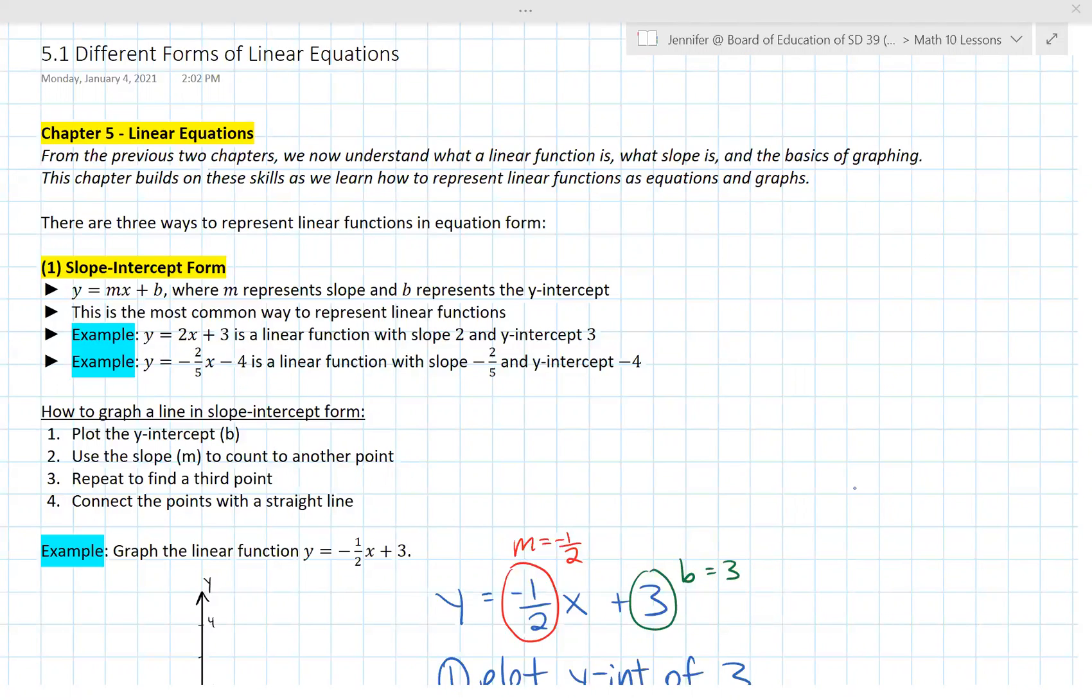You're going to see these for the rest of your high school career, the most important one being this first one, slope-intercept form. This is of the form y equals mx plus b. You may have heard of that before. m represents slope, we already learned that, and b represents the y-intercept. So of course this is called slope-intercept form because we have the slope and we have the y-intercept. This is the most common way to represent linear functions and, in my opinion, the most useful way.